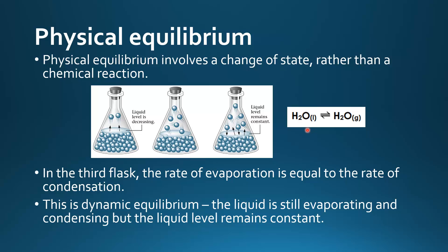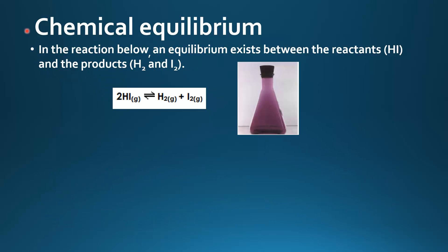We represent a system at dynamic equilibrium using a two-way arrow. Next we look at chemical equilibrium. In the reaction below, an equilibrium exists between the reactant HI and the products H₂ and I₂. Hydrogen iodide decomposes into hydrogen and iodine, and the purple color observed is due to the iodine vapor.